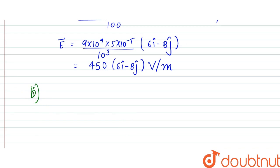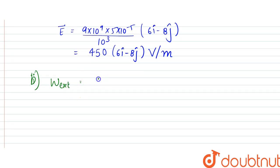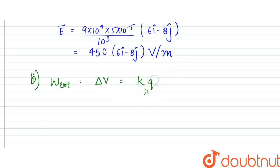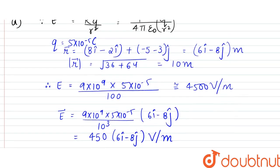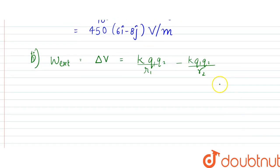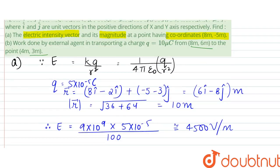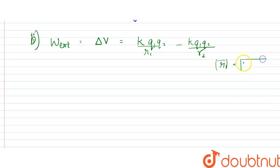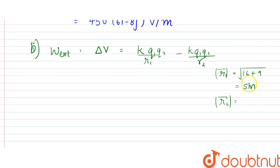The work done by the external agent would be equal to delta V, the change in potential, which is equal to KQ1Q2 by R1 minus KQ1Q2 by R2. So here R1 would be from this to this. The magnitude of R1 would be equal to root over of 4 square plus 3 square, root over of 16 plus 9, which is equal to 5 meters. And magnitude of R2 would be equal to root over of 8 square, that is 64 plus 36, which is equal to 10 meters.